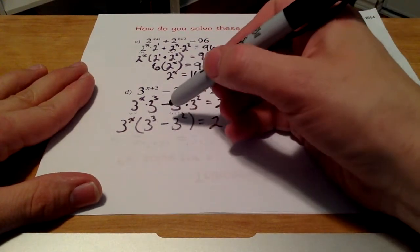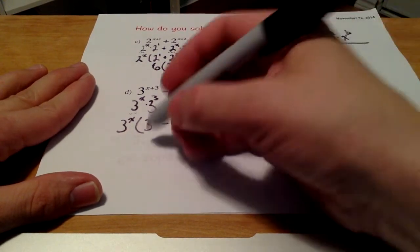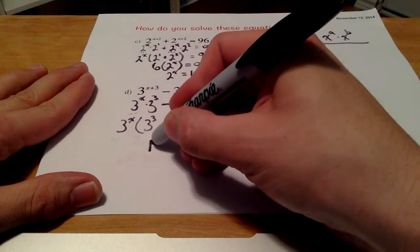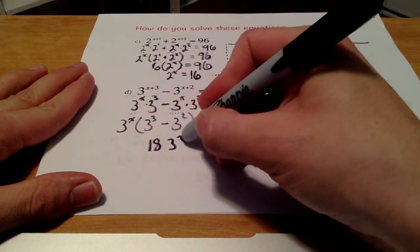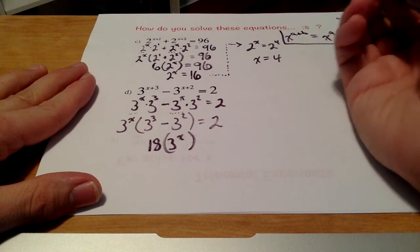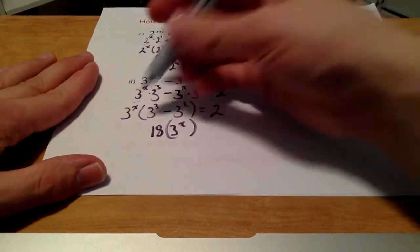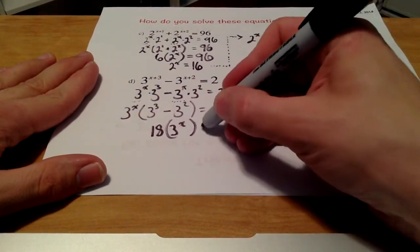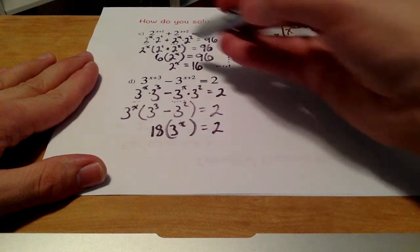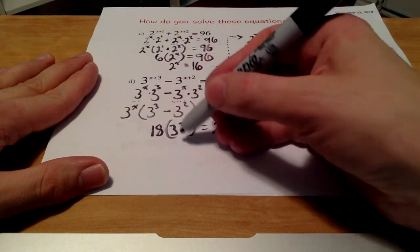3 cubed is 27, and I'm subtracting 9. That's just going to give me 18. So I'm going to write it again like this. I've got 18 times 3 to the x. I just switched those. I can do that. There's nothing wrong with that. I'm still multiplying here. I just do that because it's familiar to us, right? We're used to seeing it written like this.